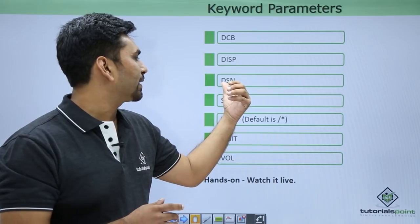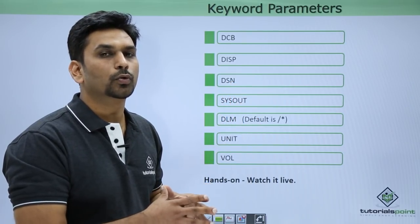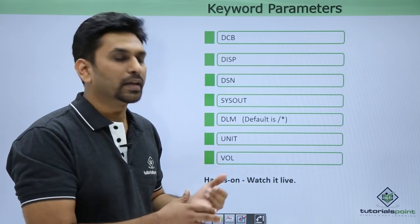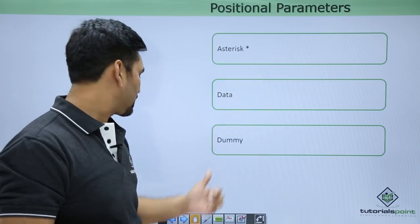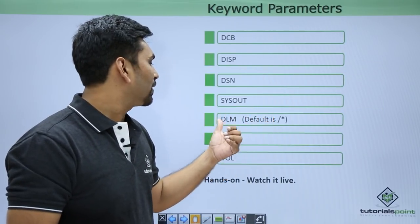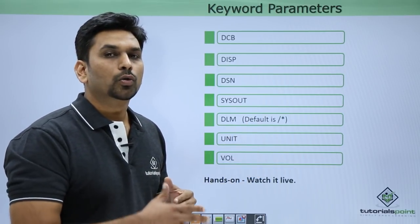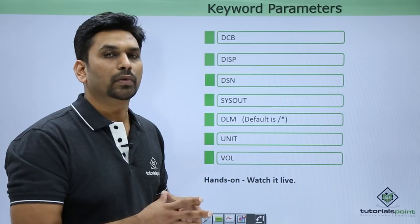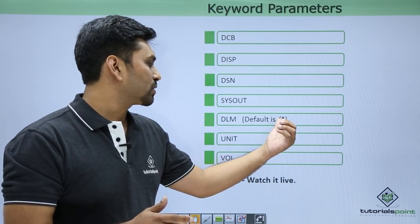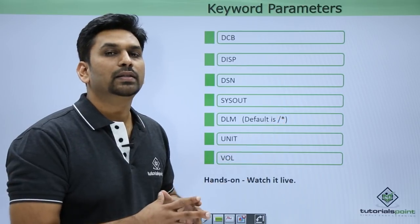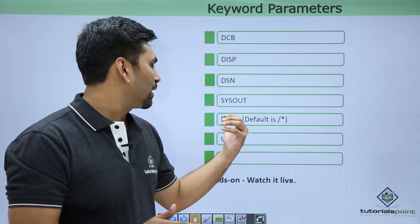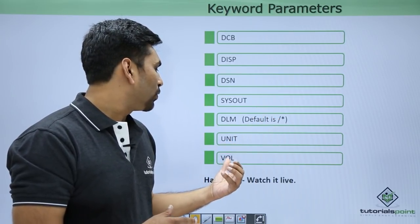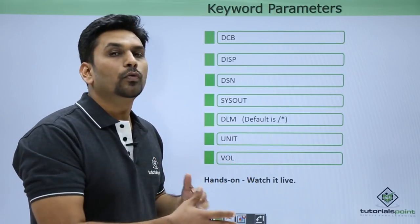Then we have DSN, which means dataset name. Here you need to give the name of the dataset you want to use — it can be input or output. Then we have SYSOUT, which specifies where system messages should be printed. It can be a dataset or asterisk — if you mention SYSOUT=*, everything will be printed to the spool. Then we have delimiter: when passing data to a COBOL module using JCL, the default delimiter is /* (slash asterisk), meaning end of data. You can change this using DLM=$$, making $$ the new delimiter. Similarly, we have unit and volume, specifying where and on which volume the datasets are stored.